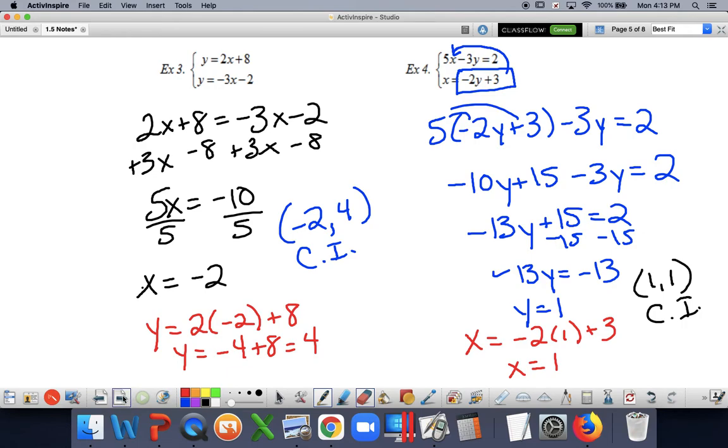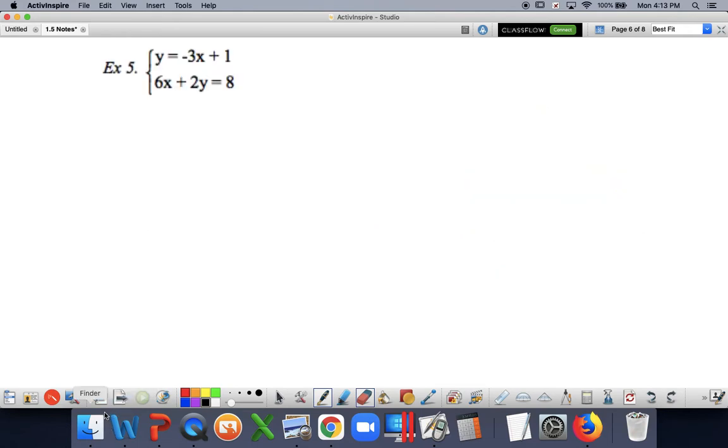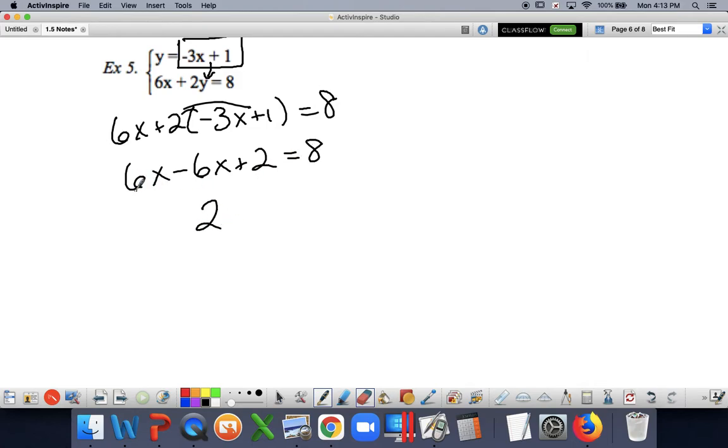So what happens if it's not consistent and independent? That's the example that we're going to get. What does it look like if I get one of those other ones, whether it's consistent dependent or inconsistent? So I've already got my substitution set up here. So let's go ahead and plug in. Wherever I see a y, I'm going to plug in those values. So 6x minus 6x is just 0. My x's cancel out completely. So I wind up with the equation 2 equals 8.